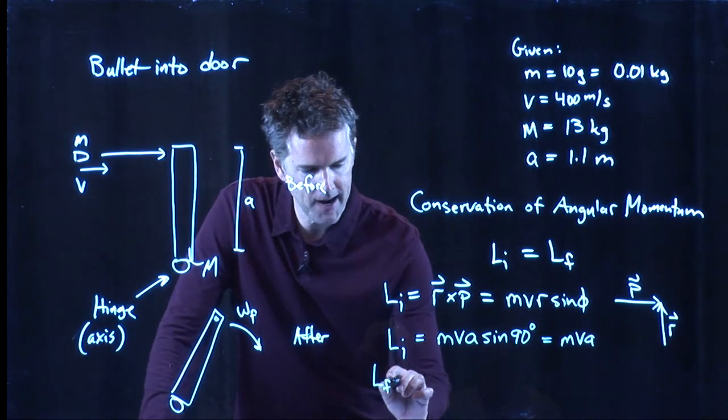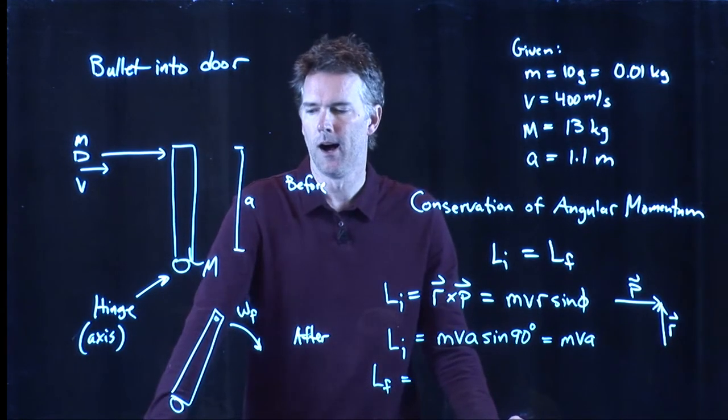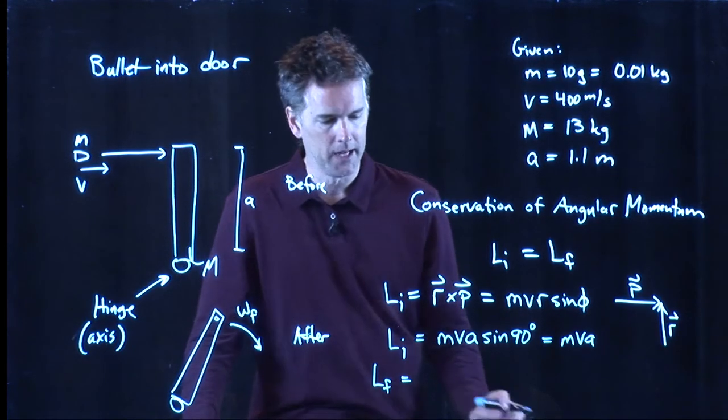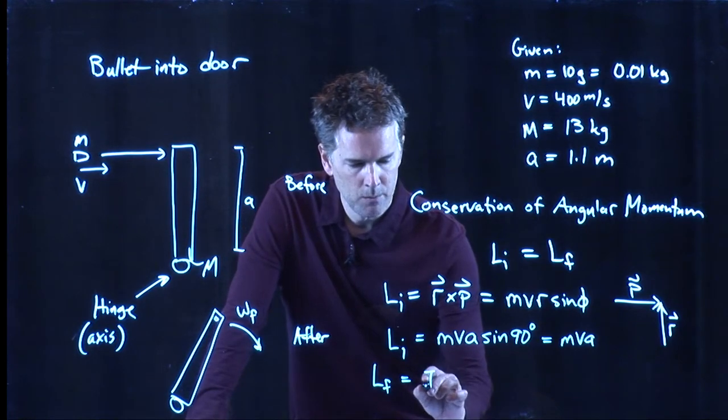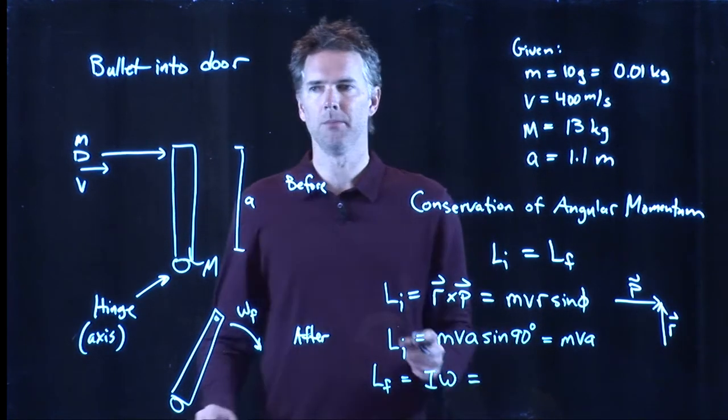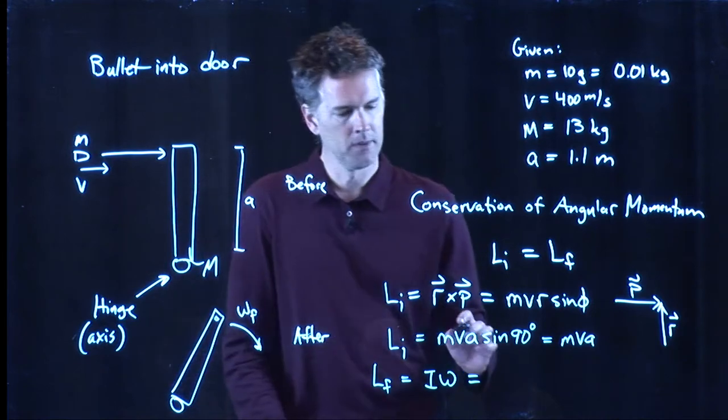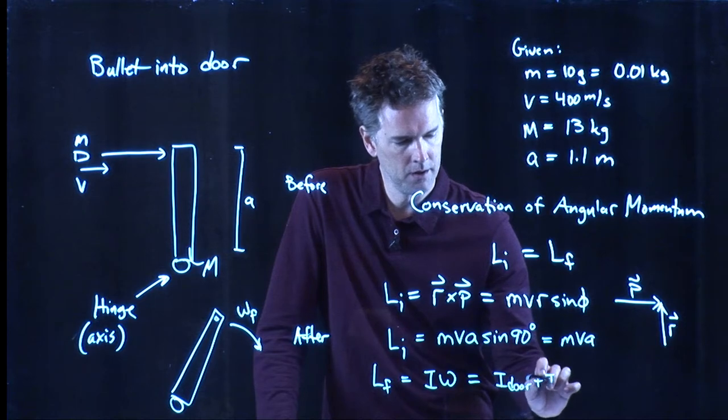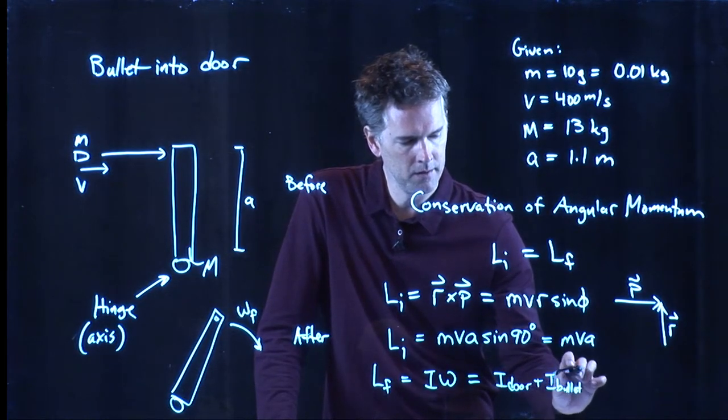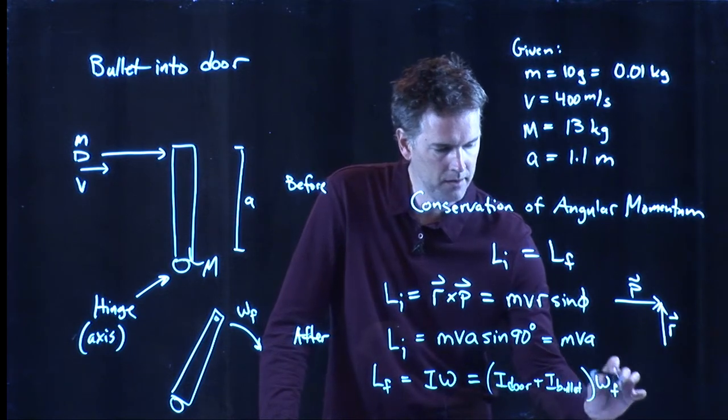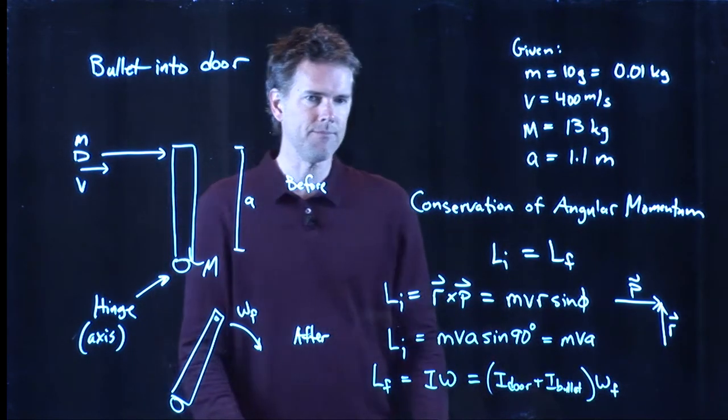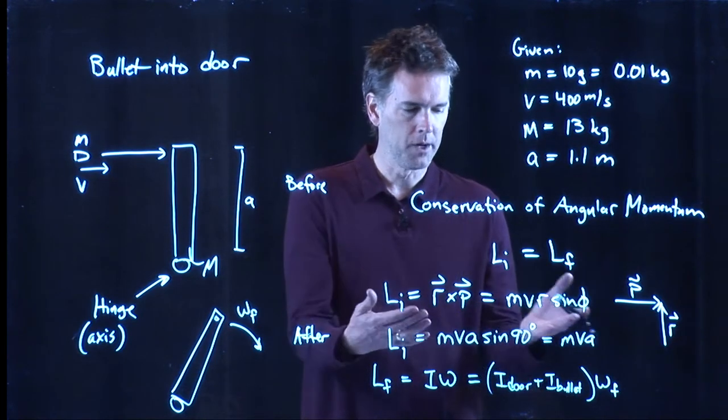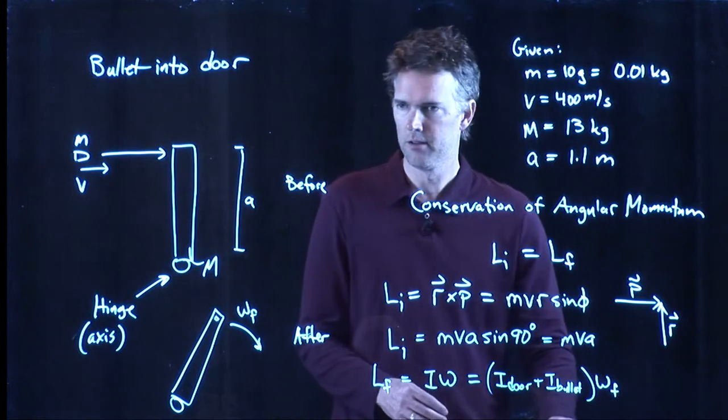What about the right side of this equation? Angular momentum finally. Well, now we have an object that consists of a door and a bullet in it. And it's rotating. We know that angular momentum is equal to I times omega. But I consists of two things, the door plus the bullet, and it's rotating at omega final. And now we need to figure out some of these moments of inertia. We can set it all equal. We can solve for omega final. So let's do that.